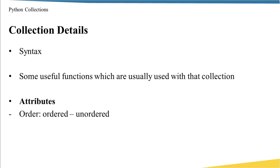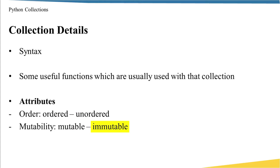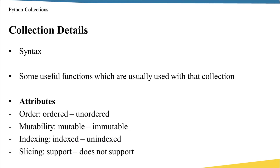For each collection, there are some attributes you have to know in detail in order to understand in which context each one is used. The first attribute is order — we say a collection is ordered or unordered. The second is mutability — we say a data structure is mutable or immutable. The third attribute is indexing — we say a collection is indexed or unindexed. And finally, slicing — we need to know if a collection supports or does not support slicing. Don't worry if you are not familiar with these yet, because the following slides will explain each one in detail.